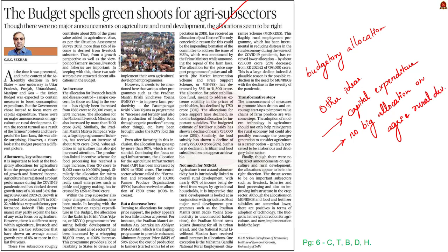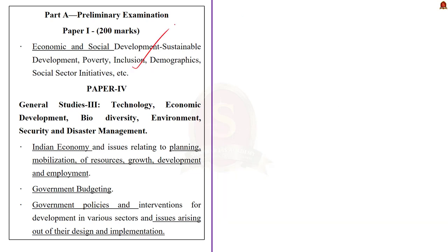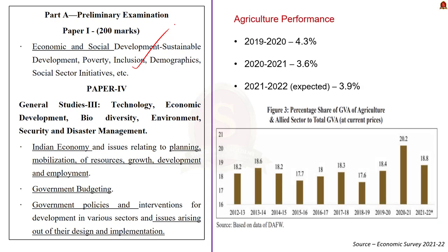He says that though there were no big ticket announcements on agriculture and rural development, the allocations made by the government appear to be in the right direction. In this context, we are going to discuss the budgetary allocation to the farm sector. While various sectors performed poorly during the pandemic, agriculture was an exception. Agriculture grew at the rate of 4.3% and 3.6% during 2019-2020 and 2020-2021, and for 2021-2022, agriculture is expected to grow at 3.9%.